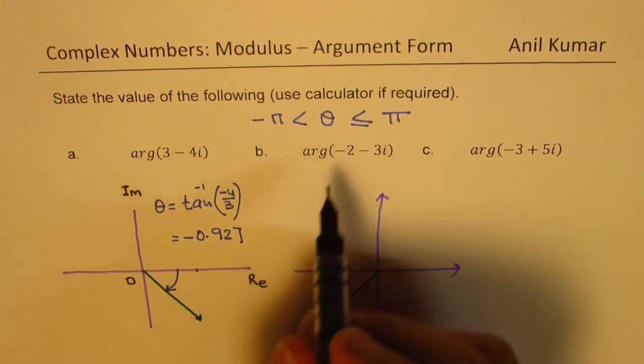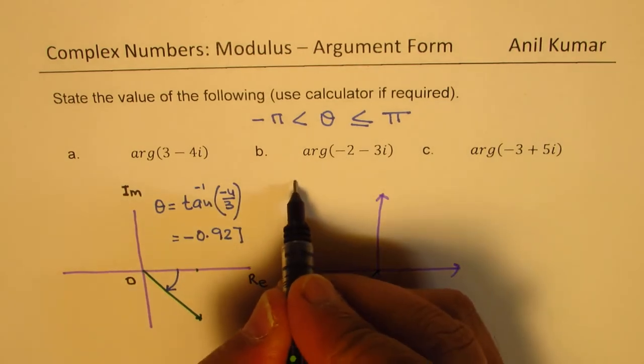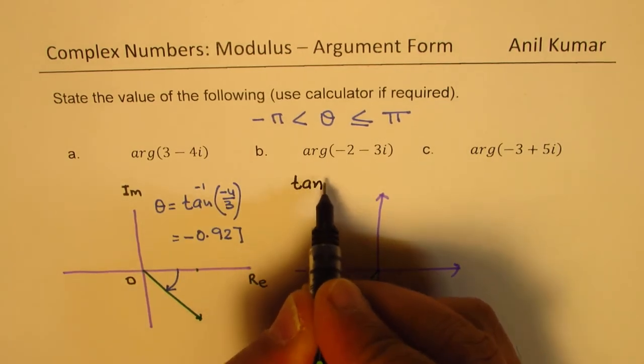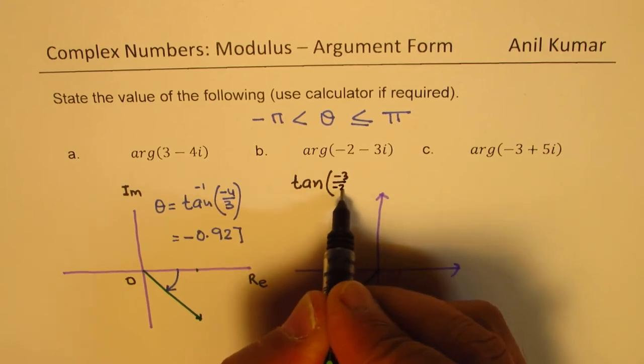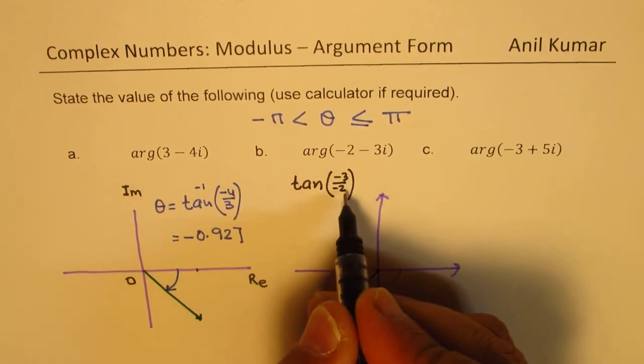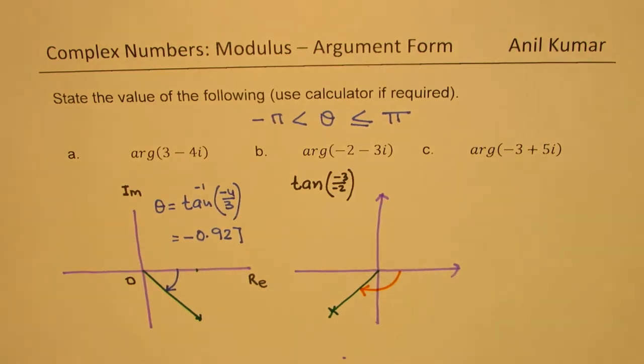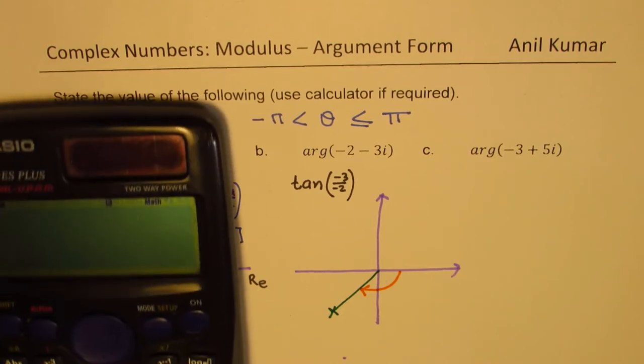So let's try to calculate using the calculator. So when we use the calculator, we will use tan of minus 3 over minus 2. So basically that is going to be the positive value. And what do we expect? We expect answer in quadrant 1.